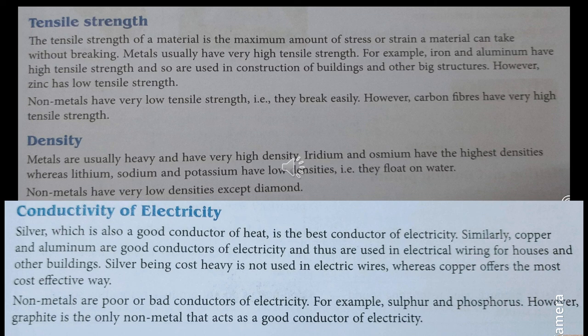Next is electrical conductivity. Silver is the best conductor of electricity. Copper and aluminum are also good conductors and are used in electrical wiring for houses and buildings. Silver, being expensive, is not used in electric wires — copper offers the most cost-effective option. Nonmetals are poor conductors of electricity — for example, sulfur and phosphorus. However, graphite is the only nonmetal that acts as a good conductor of electricity. It is an allotrope of carbon.